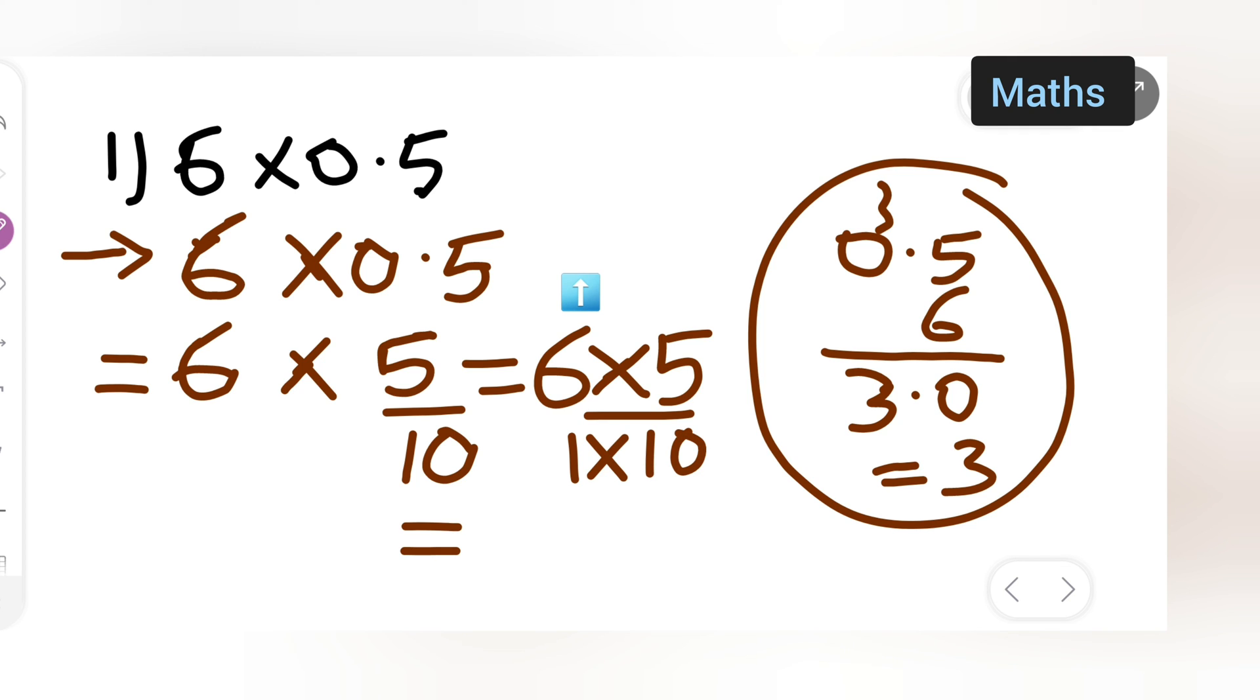This is equal to 6 times 5, which gives you 30 upon 10. So basically, the zeros get cancelled and your answer is 3. This is one of the easiest methods you can try.